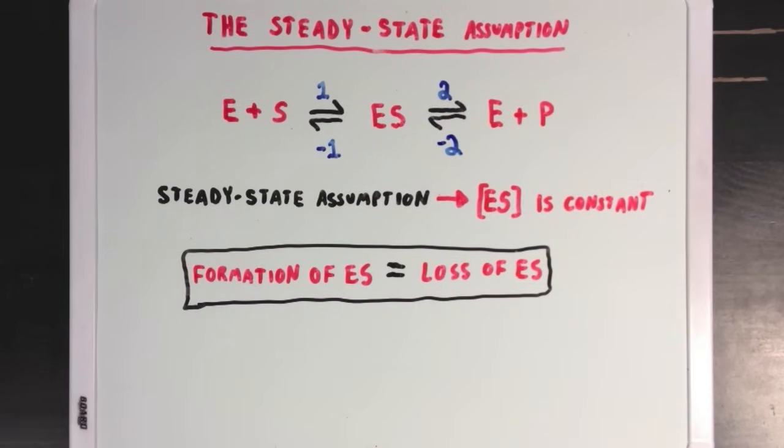If we look at that in terms of our rates, we can say that the rate of formation of ES would be the sum of rate 1 and rate minus 2, since both of these reactions lead to ES. And the rate of loss of ES is equal to the sum of rates minus 1 and 2, since both of these lead away from ES.